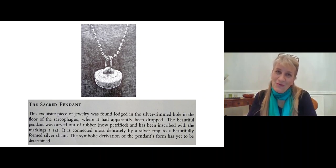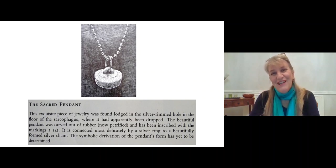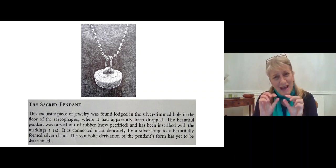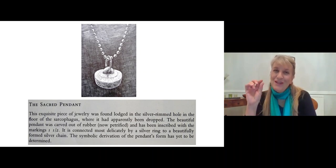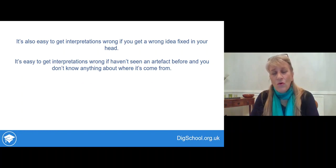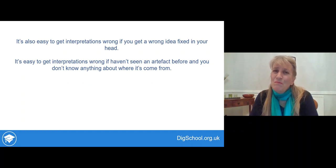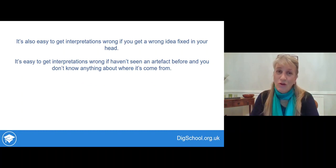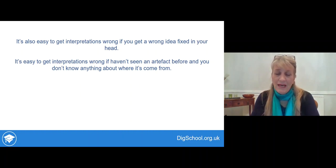This all seems absolutely bonkers when we're reading it through, but the whole book is a very amusing story about how easy it can be to get things wrong if you're thinking about things the wrong way. It's also easy to get things wrong if you haven't seen an artefact before or if you don't know anything about where it came from. These are problems we all face when looking at stuff from the past.